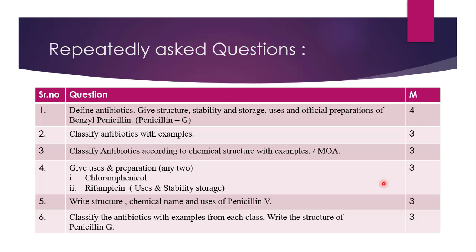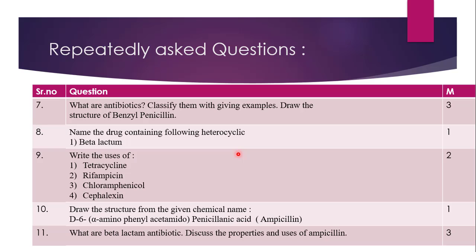Question 5 is: Write the structure, chemical name, and uses of Penicillin V, that is Phenoxymethylpenicillin. This question also carries three marks. Question 6 is: Classify the antibiotics with an example from each class and write the structure of Penicillin G, that is Benzylpenicillin. Classification along with the Penicillin G structure — this question also carries three marks.